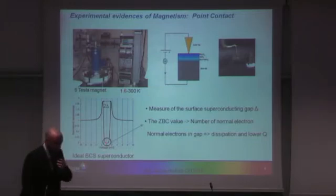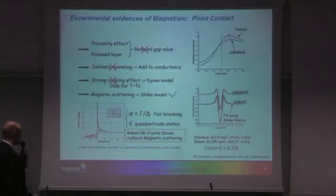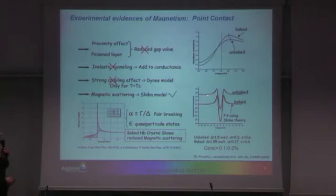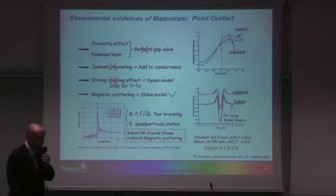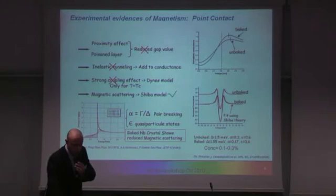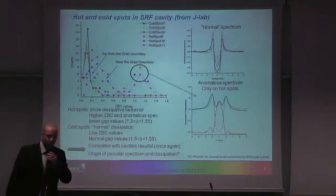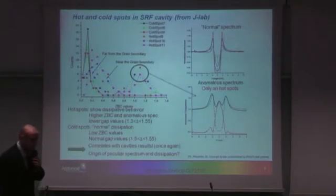Unpaired electrons will participate in the dissipation. So what do we obtain for the real case? We do have a finite density of states at the Fermi level — it's not a perfect superconductor. It turns out the best fit we can obtain is with the Shiba theory, which takes into account the presence of magnetic impurities inside the superconductor.